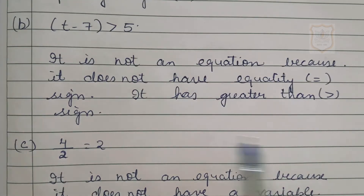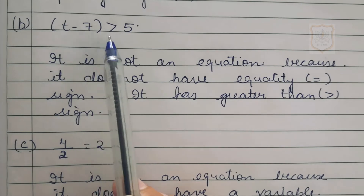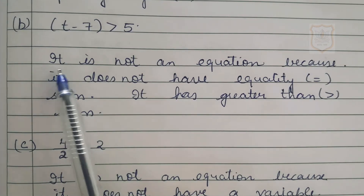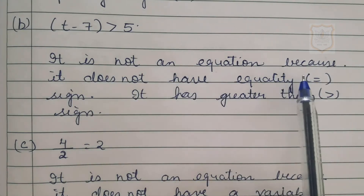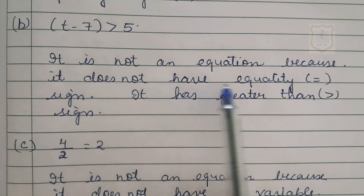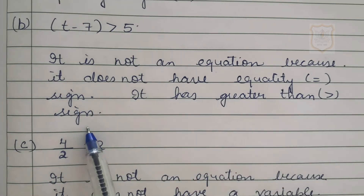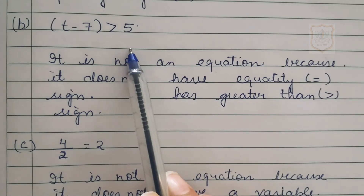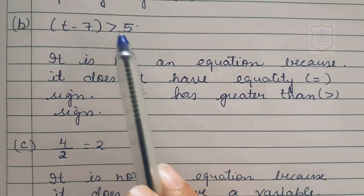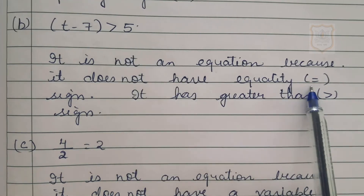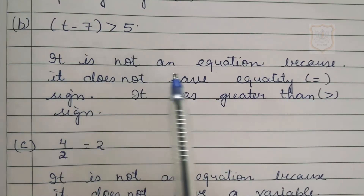Part B of question number 1: T minus 7 is greater than 5. We have to state whether this is an equation with a variable or not. It is not an equation because it does not have an equality sign — it has a greater than sign. This is not an equation with a variable because it doesn't carry an equality sign.